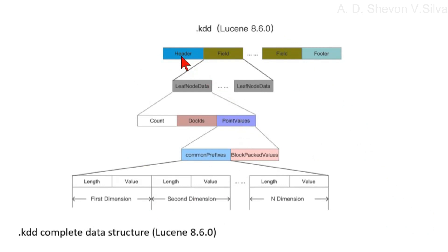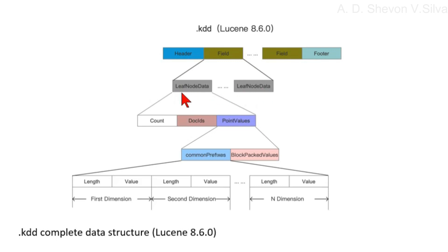Here you can see the dot kdd has a header field and a footer field, as well as leaf node data. The leaf node data consists of a count, doc IDs, and point values.